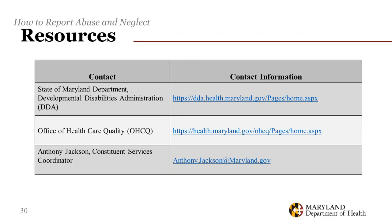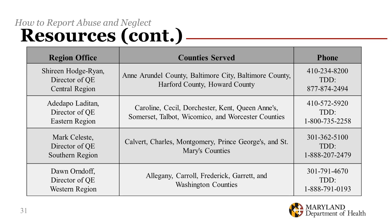That finishes our presentation on how to report abuse and neglect. We will now review a couple of resources. We have the contact information for the Developmental Disabilities Administration, the Office of Healthcare Quality, and Anthony, our Constituent Services Coordinator. If you decide to contact the region directly, you will want to direct your call to one of the following Regional Directors of Quality Enhancement: Shireen Hodge Ryan in the Central Region, Adedapo Lattatan in the Eastern Region, Mark Celeste in the Southern Region, and Don Orndoff in the Western Region.